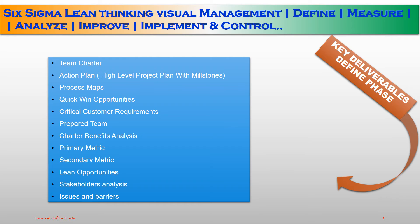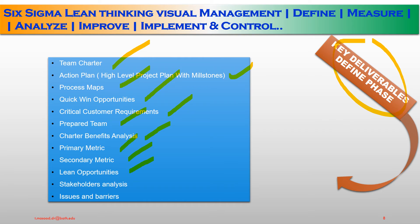Key deliverables for the Define phase: first, set up a team charter — the charter guidelines and barriers. Second, an action plan: a high-level project plan with milestones, process mapping, quick win opportunities, critical customer requirements, a prepared team, benefit analysis, primary metrics, secondary lean opportunities, stakeholder analysis, and issues and barriers. These are the deliverables we need to understand and validate in order to enter into the next phase.